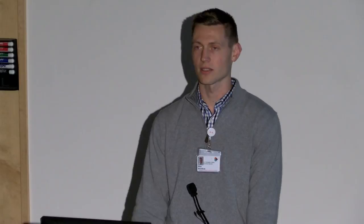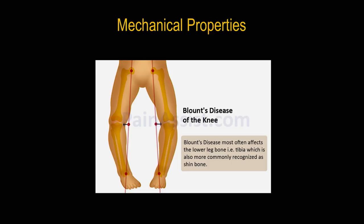One common example we see as orthotists is in pediatric patients with Blount's disease. While not a fracture, it drives home what can happen when bone does not properly react. Blount's disease develops during early childhood and can be managed orthotically with bracing. We see a ground reaction force — the weight line running through the inside of both knees — where stress, strain, tension, and compression are not reacting properly, causing the bone to curve outward. We'll talk more about how orthotists can correct that with three-point pressure systems.